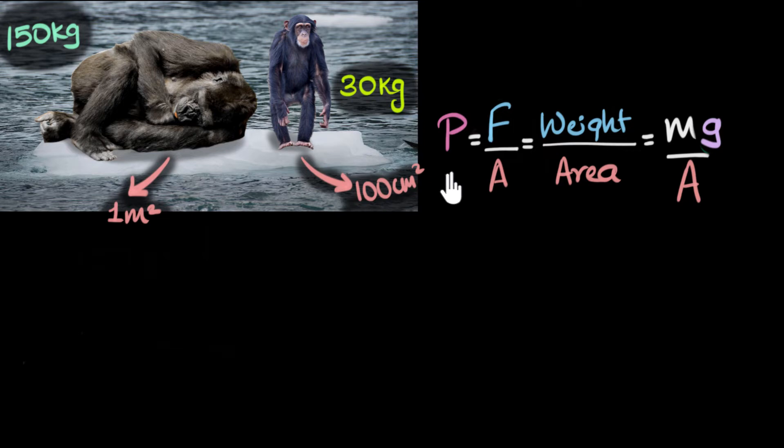And so, now that we know how to calculate pressure, can you try and calculate who's putting more pressure on the ice first? Good. Give it a shot. And just to make the calculation simple, let's assume g to be 10 meters per second squared instead of 9.8. Okay? So pause the video and give this a shot first. All right?